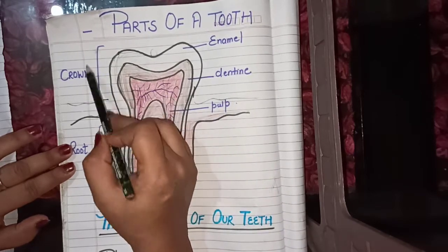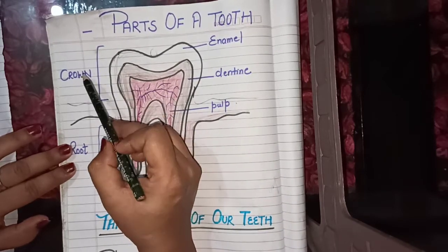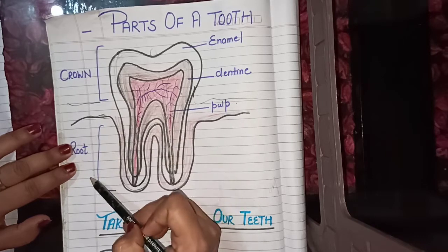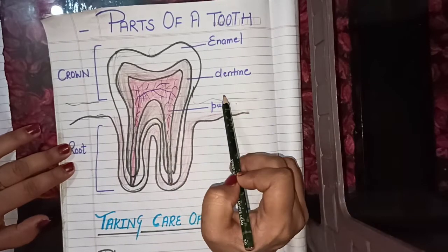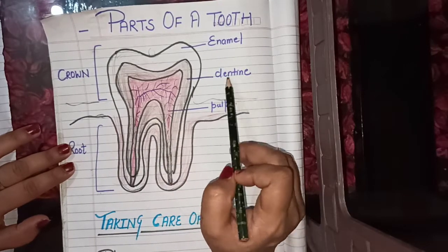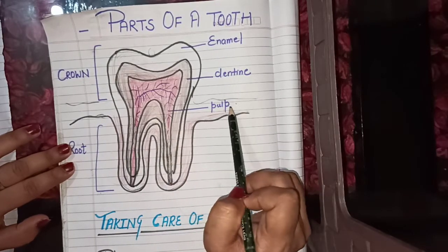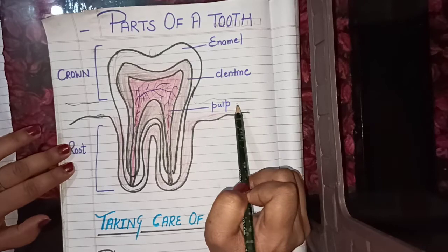So, to summarize: a tooth has two parts — crown and root — and three layers: enamel, dentine, and pulp.